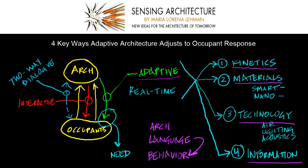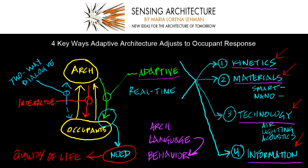As you design, think about these ways that your architecture can use kinetics, smart materials, technology, and information to help your architecture make changes to itself in real time to help meet occupant need. I think this will help your designs to stand out as superb occupant experiences that help to uplift quality of life. Thank you for watching.